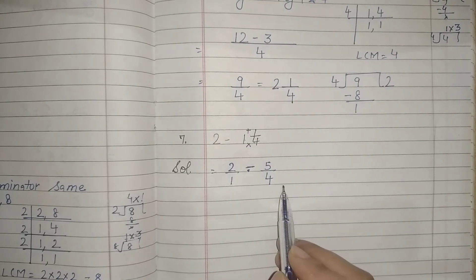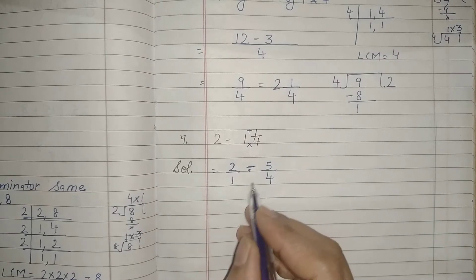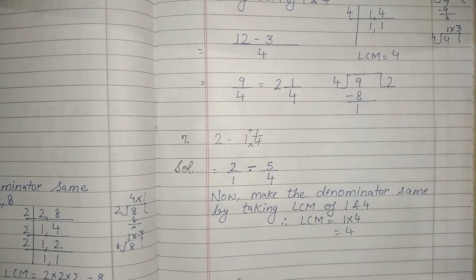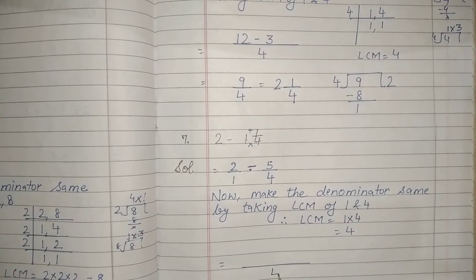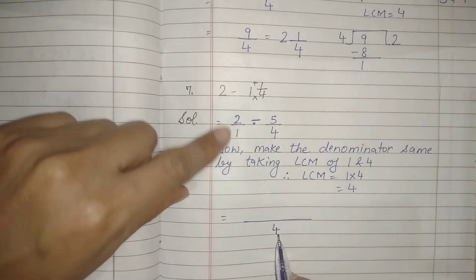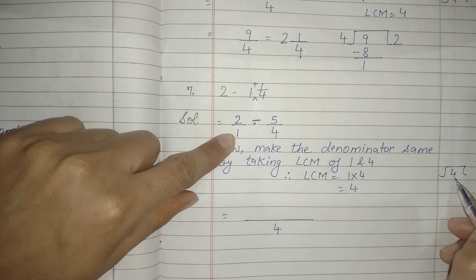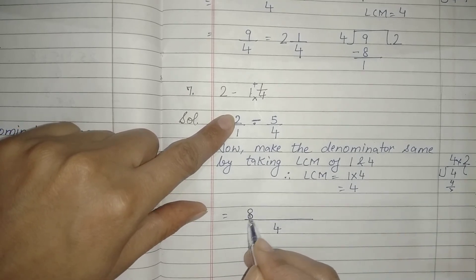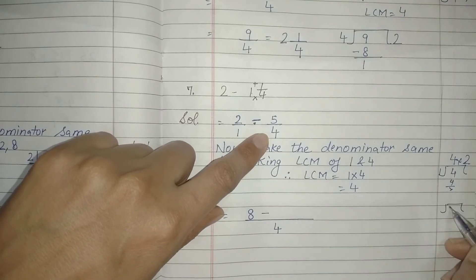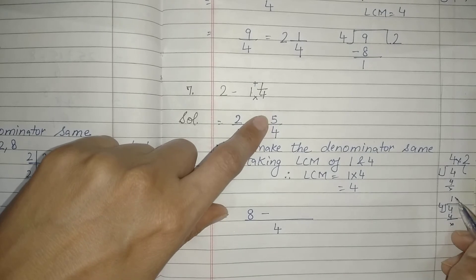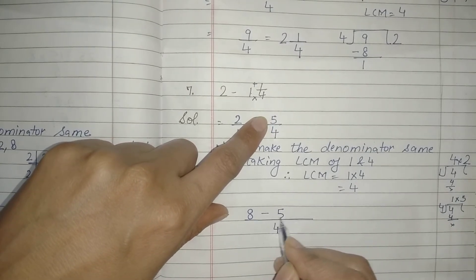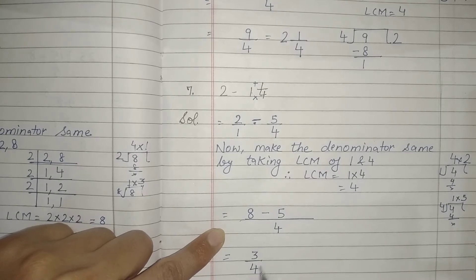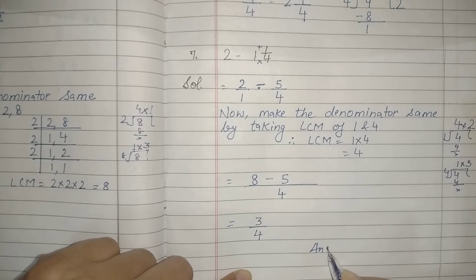Now we will make the denominator same by taking LCM of 1 and 4. So here again the LCM is 4. Now let us write the LCM below the horizontal line. Ab LCM ko first wale fraction ke denominator se divide karenge: 4 ko 1 se divide karenge — 1 four is 4. Aur numerator se multiply: 4 twos are 8. Same we will do with the next fraction: 4 ko 4 se divide karenge — 1 multiplied by 5 is 5. Now hum subtract karenge: 8 minus 5 it is 3 upon 4. Ye hamaara proper fraction hai, so the answer is 3 upon 4.